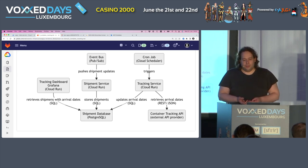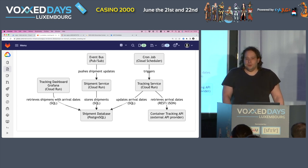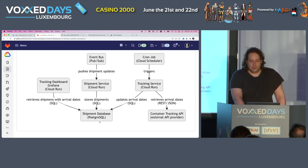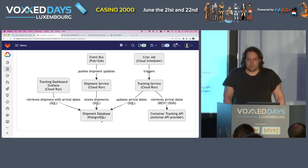Typically, what you're doing in clouds is you want to have things running privately, like in a private network — a private virtual cloud, a VPC. What you have to consider for Cloud Run is you can't put it directly in a VPC, but you can use connectors to such private networks. For instance, that could be done for the shipment database. The database is running in a VPC and the Cloud Run services all have a connector to access it.